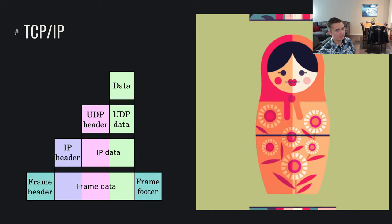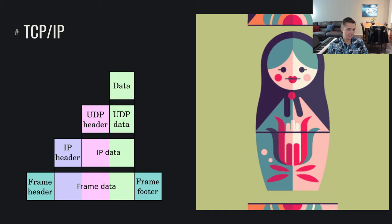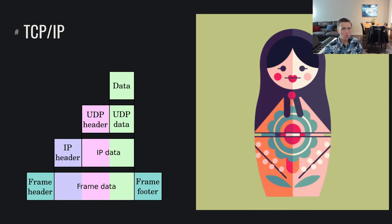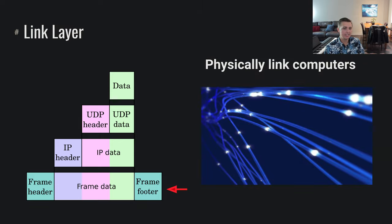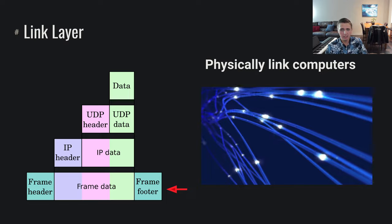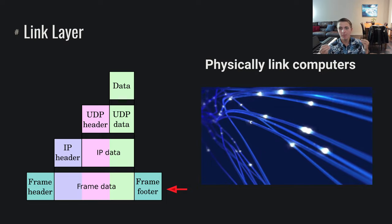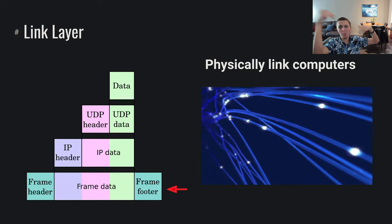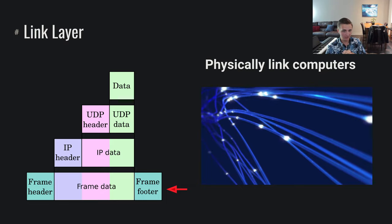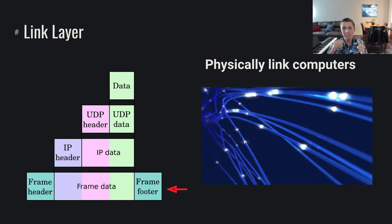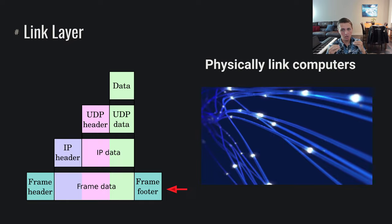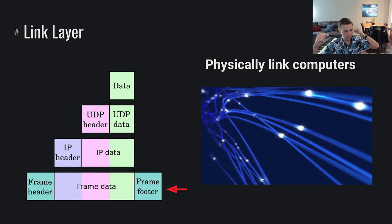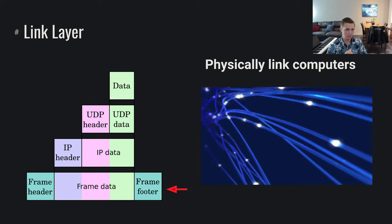The very first layer we're going to look at is the link layer. We can imagine that there's some physical connection, some physical link between my computer and another computer. All of these are in some way linked together to bring up a broader network of networks. The link layer concerns itself with the immediate neighbor — my system is directly connected to this system, and I need to be able to directly pass information from my system to my immediate neighbor.